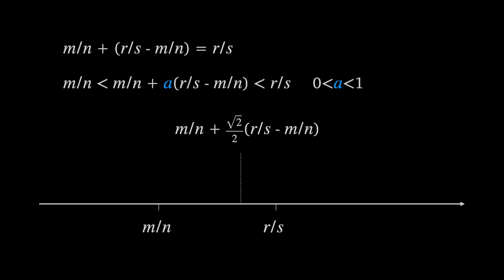So for example root 2 over 2 is about 0.7 and that's the proof we have something in between the two rational numbers which is a rational number plus an irrational number times a non-zero rational number. So this number is irrational.